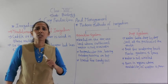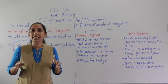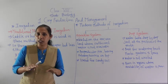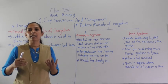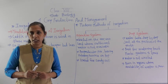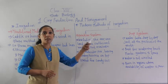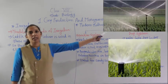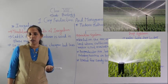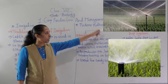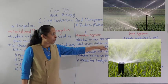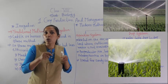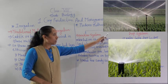The sprinkler system is useful on uneven land where the availability of water is less. This system is mainly used in areas where the land is uneven and there is less availability of water in that region. In the sprinkler system, there is a perpendicular pipe to the land, and on top of that perpendicular pipe there is a rotating nozzle which has holes.